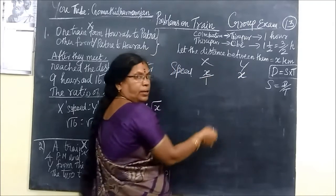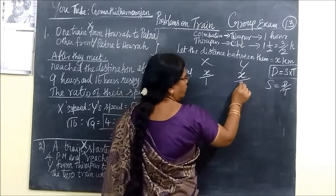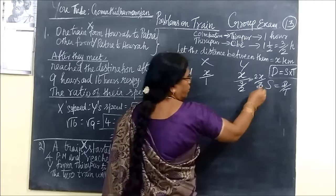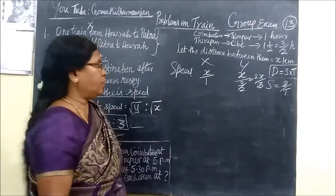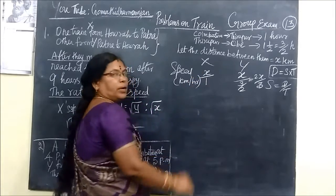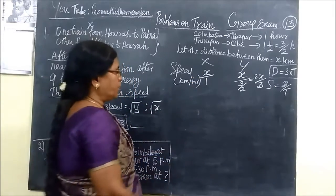Here the time taken is 1 hour. Here the time taken is 3 by 2. So if we receive program you get 2X by 3. So this is speed. Speed means km per hour. The unit is km per hour.